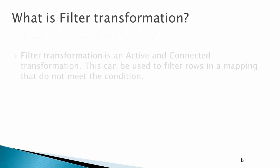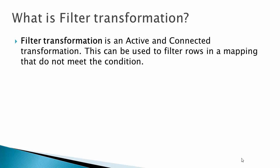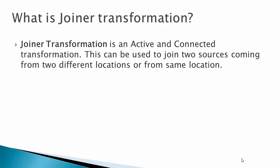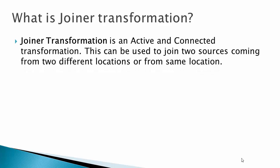Filter transformation is an active and connected transformation. It can be used to filter rows in a mapping that do not meet specific conditions. Joiner transformation is also an active and connected transformation. It can be used to join two sources coming from two different locations or from the same location.